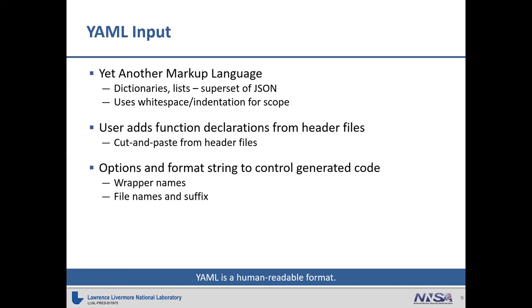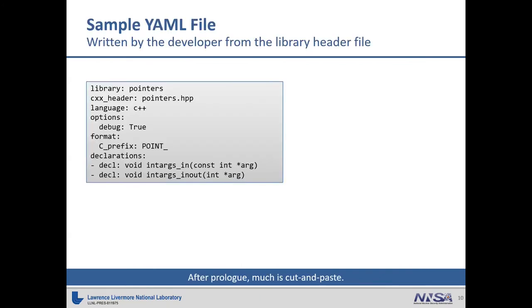YAML sells itself as a human-readable format. This is a sample of a YAML file: library is the keyword, 'pointers' is the value — the name of the library being wrapped. Options is a dictionary containing another dictionary. Declarations is a dictionary entry that has a list of declarations, which are just cut and pasted out of the header files. Ideally you set up how you want to write things and then there's a lot of cutting and pasting afterwards.